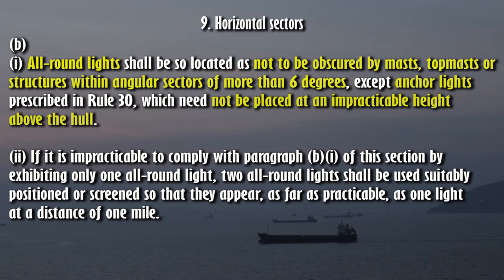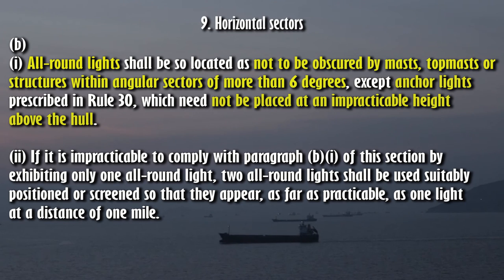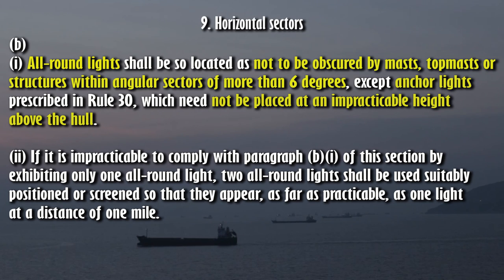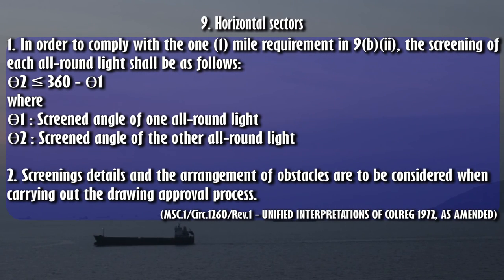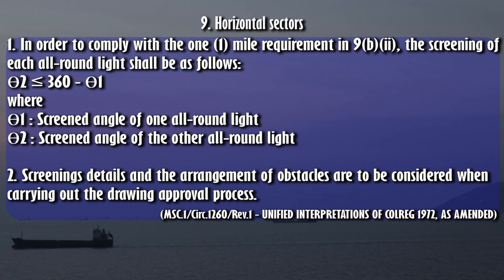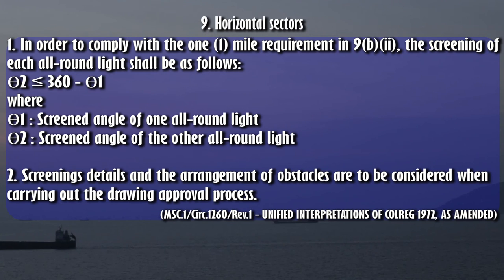(B)(1) All-round lights shall be so located as not to be obscured by masts, topmasts, or structures within angular sectors of more than 6 degrees, except anchor lights prescribed in Rule 30, which need not be placed at an impracticable height above the hull. (2) If it is impracticable to comply with paragraph B(1) by exhibiting only one all-round light, two all-round lights shall be used, suitably positioned or screened so that they appear, as far as practicable, as one light at a distance of one mile. To comply with the one-mile requirement, the screening of each all-round light shall satisfy: θ₂ ≤ 360° − θ₁, where θ₁ is the screened angle of one all-round light and θ₂ is the screened angle of the other all-round light. Screening details and the arrangement of obstacles are to be considered when carrying out the drawing approval process.